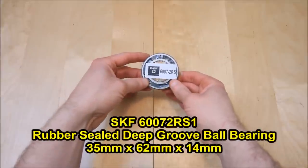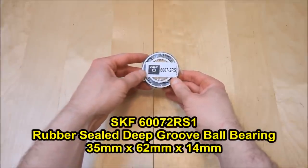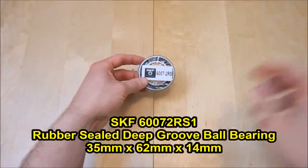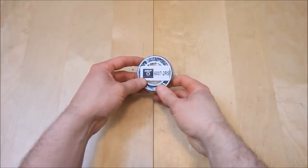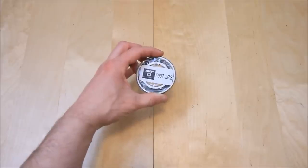The other part you need is this. This is another deep groove bearing but this is done by SKF. And this is the size 6007-2RS. You're going to need one of those.